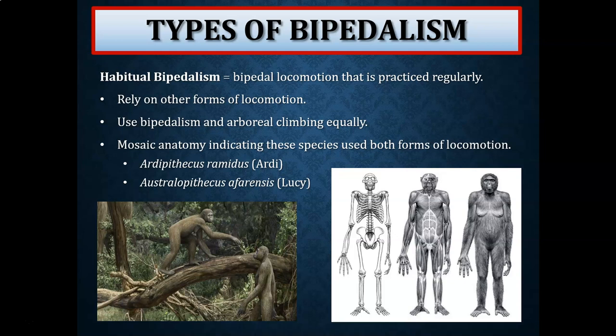Examples of habitual bipeds we'll review include Ardipithecus ramidus, nicknamed Ardi, and Australopithecus afarensis, nicknamed Lucy. Looking at the Ardipithecus fossil representation, it is extremely mosaic — the arms are much longer than you would expect in a typical biped, the phalanges are longer and curved allowing for arboreal climbing and possibly some brachiation, while other features indicate bipedalism.